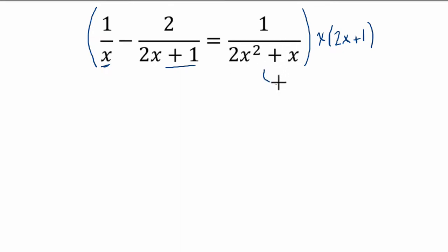I know that 2x squared plus x, if I just quickly factor that over here, the common factor in 2x squared plus x is x, and if you multiply x by 2x we get 2x squared, and x by 1 we get x. So I recognize that this denominator, 2x squared plus x, is simply the product of x and 2x plus 1, which is a multiple of itself.